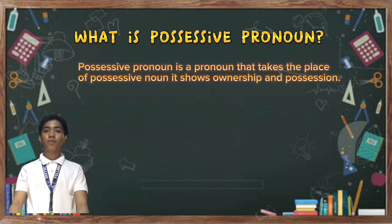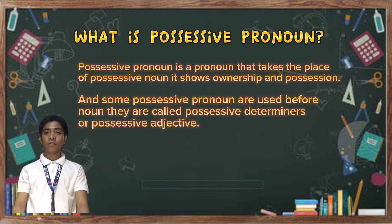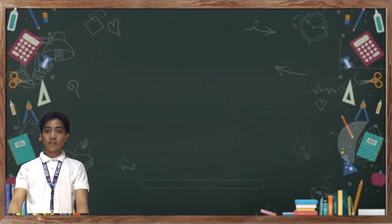A possessive pronoun is a pronoun that takes the place of a possessive noun. It shows ownership and possession. Some possessive pronouns are used before nouns — they are called possessive determiners or possessive adjectives — and some pronouns can stand alone.